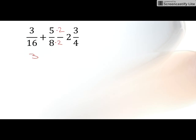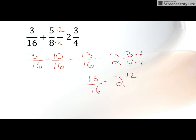So now I'd have 3 16ths plus 10 16ths. And that gives me 13 16ths. Now I got to take and subtract from there minus 2 and 3 4ths. So I need common denominators here. So I'm going to make this 16 because 4 goes into 16. So times 4 and times 4. So I have 13 16ths minus 2 and 12 16ths.